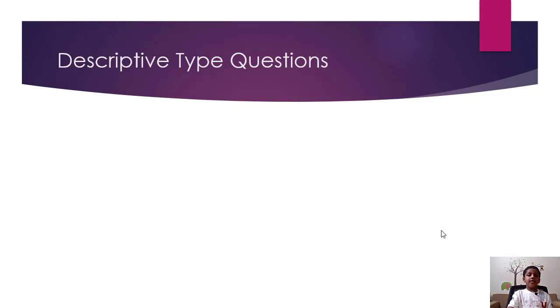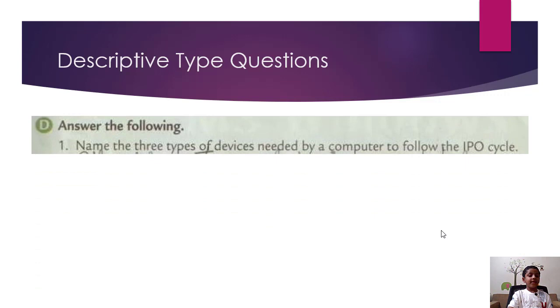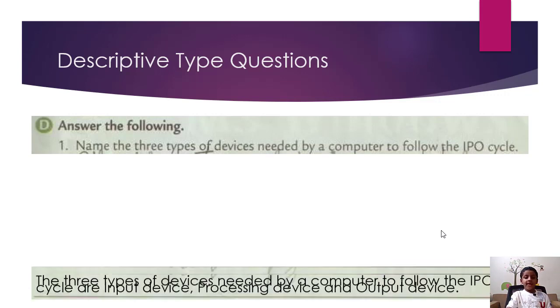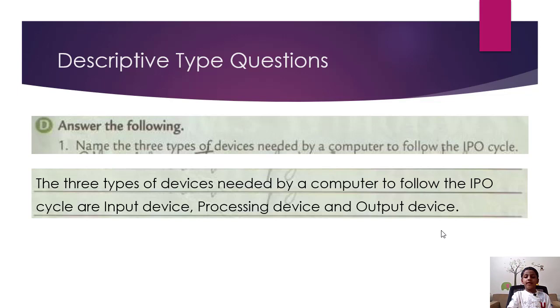Descriptive type questions. D, answer the following. One, name the following: Name the three types of devices needed by a computer to follow the IPO cycle. So the answer is the three types of devices needed by a computer to follow the IPO cycle are input device, processing device, and output device.